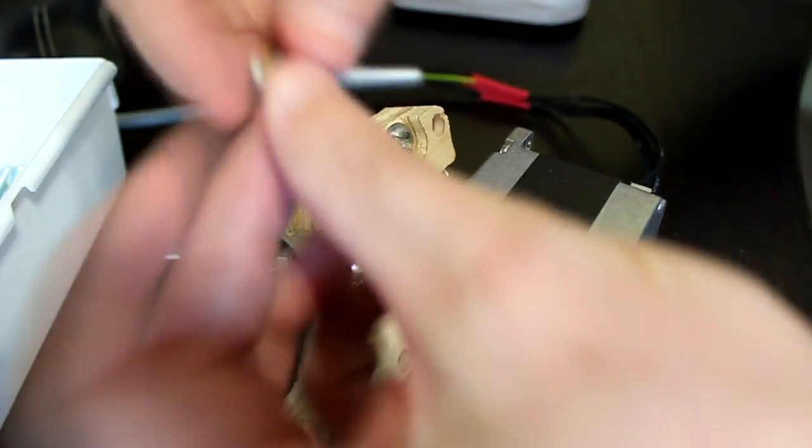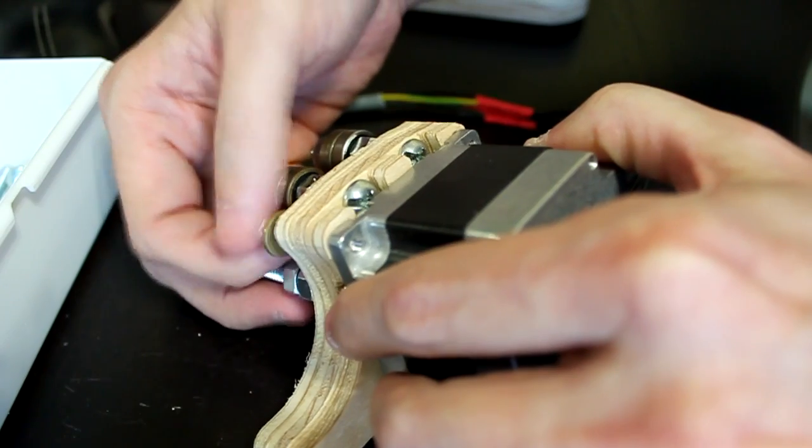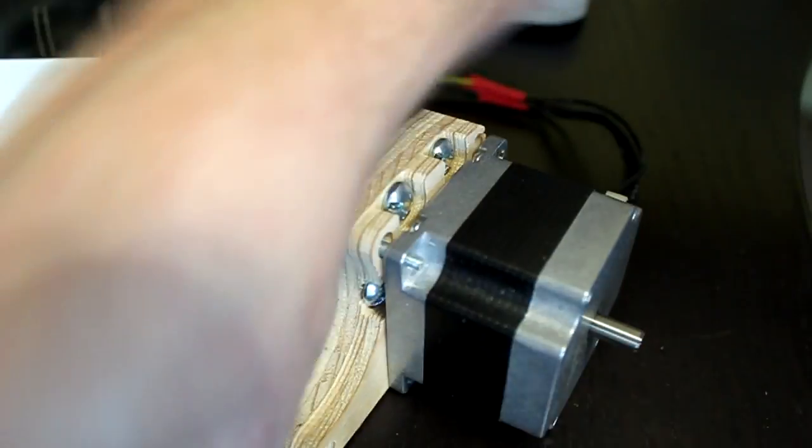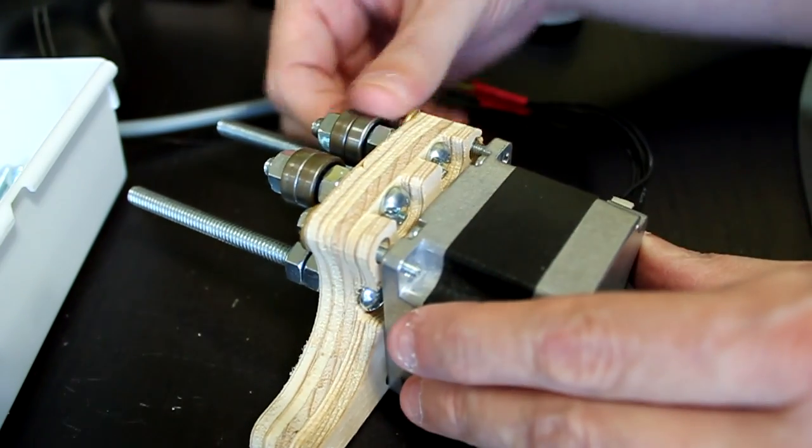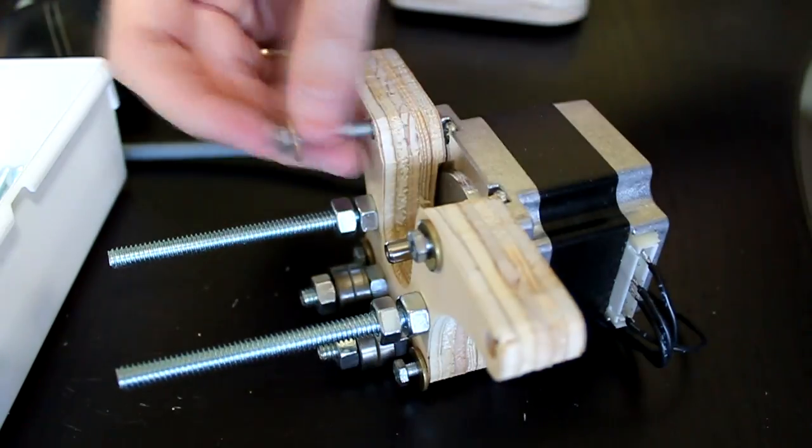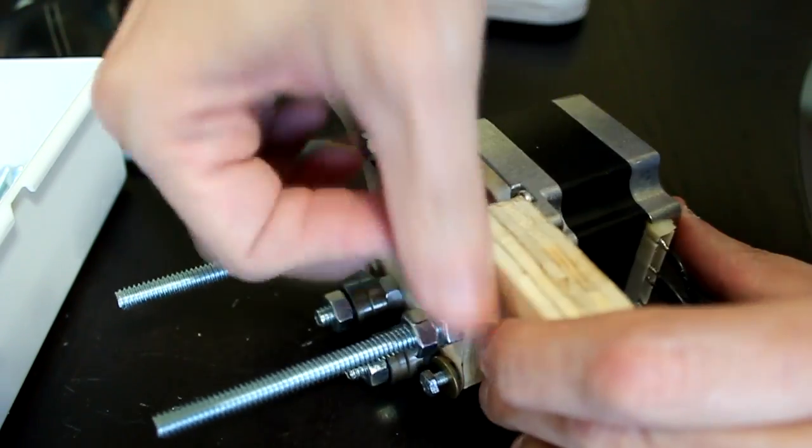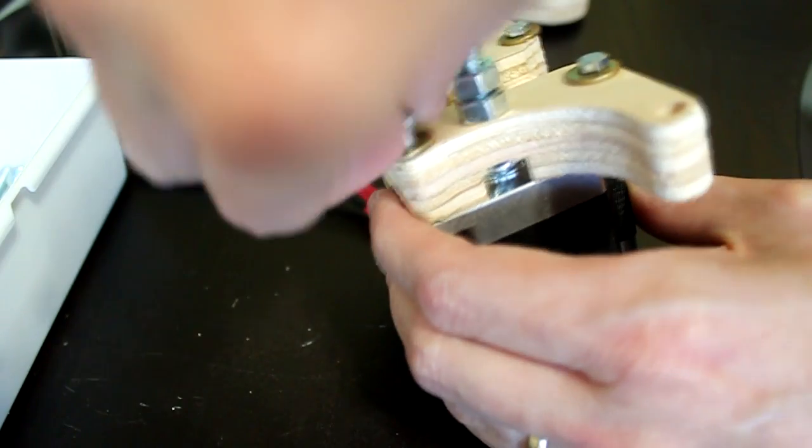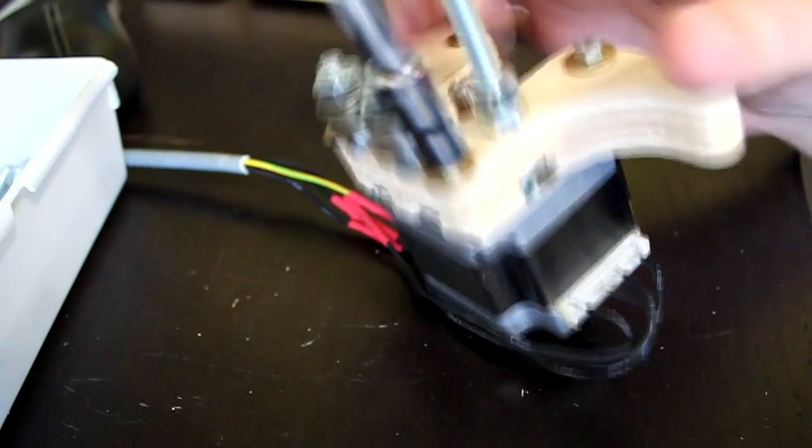In the next step you'll fasten the motor to the motor housing. Make sure that the motor is oriented so the wires of the motor will not get in the way of its function. They should be either to the right or to the left. Use four number eight or number six screws. It also might be an M4 screw depending on the motor.